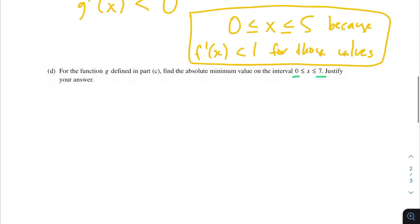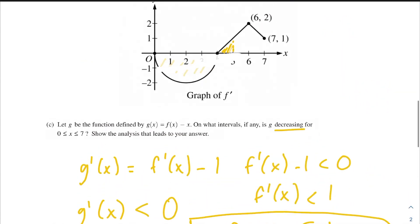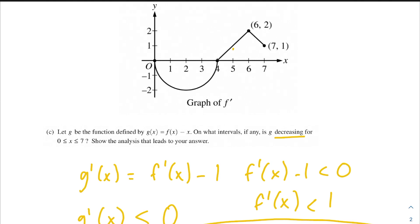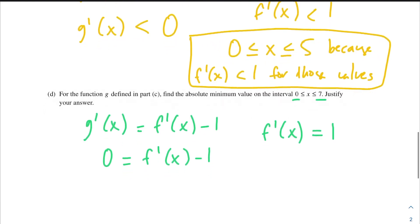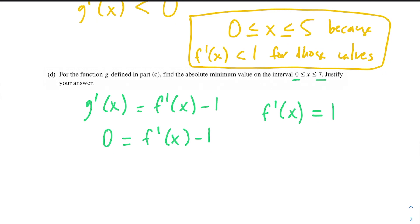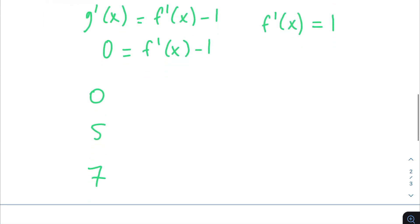With our first derivative test, we take the derivative of g(x). The derivative of g(x) is f'(x) - 1. We want to set that equal to 0 to find where we have critical points. So 0 = f'(x) - 1, which means f'(x) = 1. If we go up to our graph, it looks like that happens at x = 5. So that is our critical point. And then we also want to evaluate it at the ends of the domain, so 0 and 7.